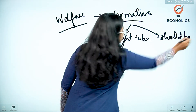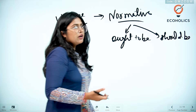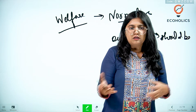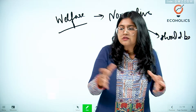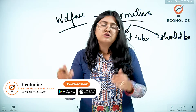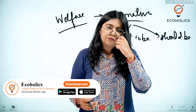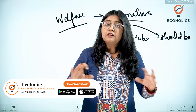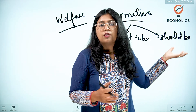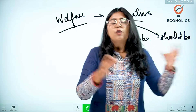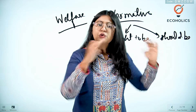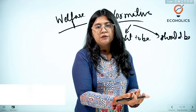It is different from positive science, which talks about what is done in reality — what is reality, what is produced in reality, what is consumed in reality. So it is done in a different manner. This is a branch of economics which is concerned about what a certain parameter should be.